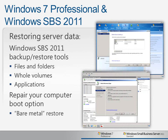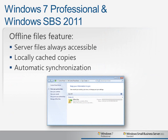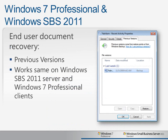Restoring data has also become much quicker and much easier, allowing you to recover individual files and folders, entire volumes, or even specific applications. In the event of a catastrophic failure, you can choose the Repair Your Computer option when you boot from the installation media and do a bare metal restore to a brand new hard drive or even a new server. The Offline Files feature of Windows 7 Professional encourages users to always store their information on the server, because they can create locally cached copies of any server folders using the Sync Center. This lets them work offline for laptops not always in the office, and when they return to the network, their data is automatically synchronized back to the server. End users can also easily recover accidentally deleted or overwritten files using the Previous Versions feature right within Windows Explorer, which works the same way for files stored on the SBS 2011 server as well as on Windows 7 Professional client computers.